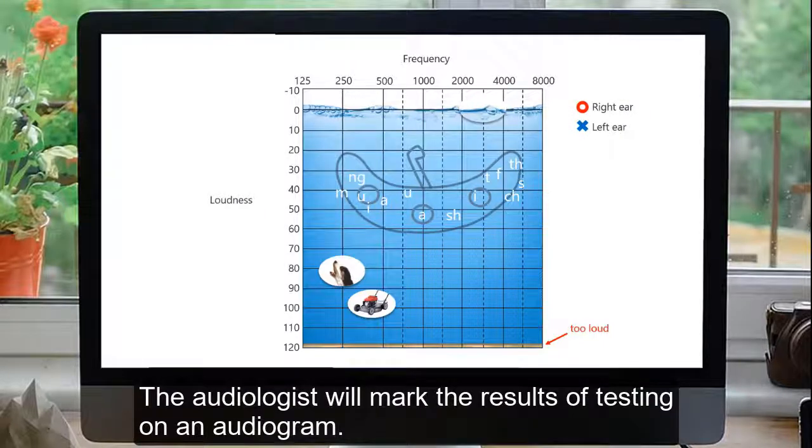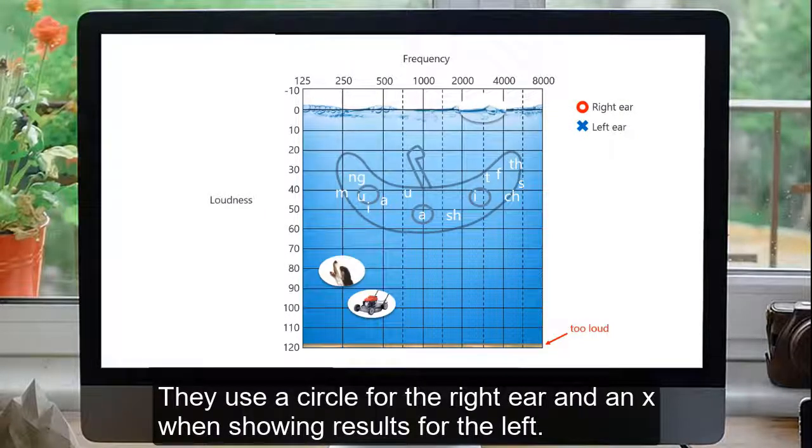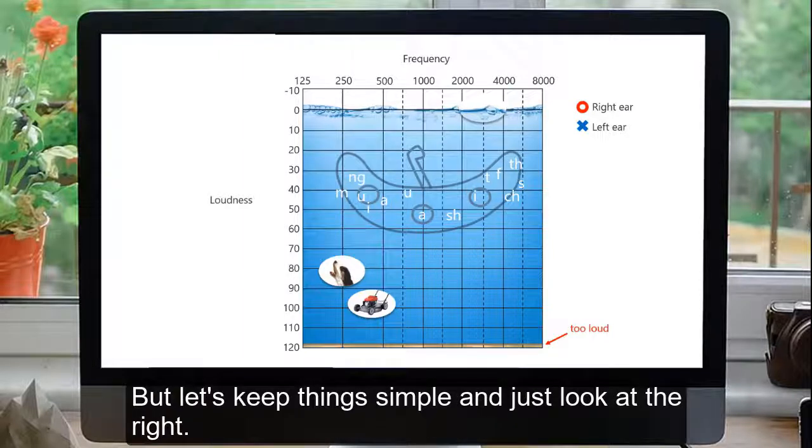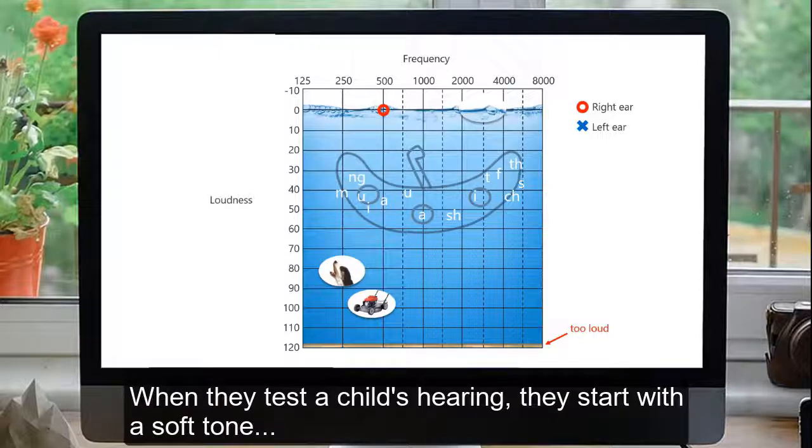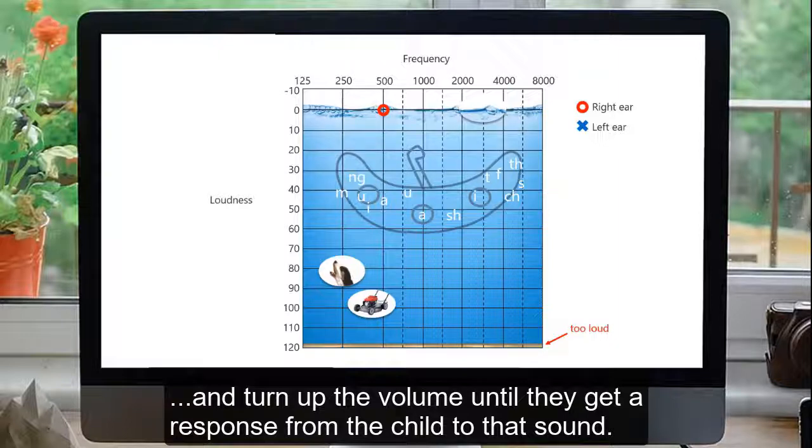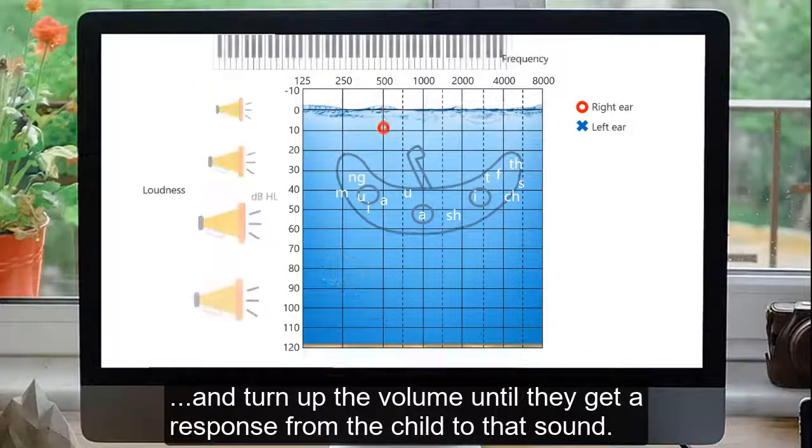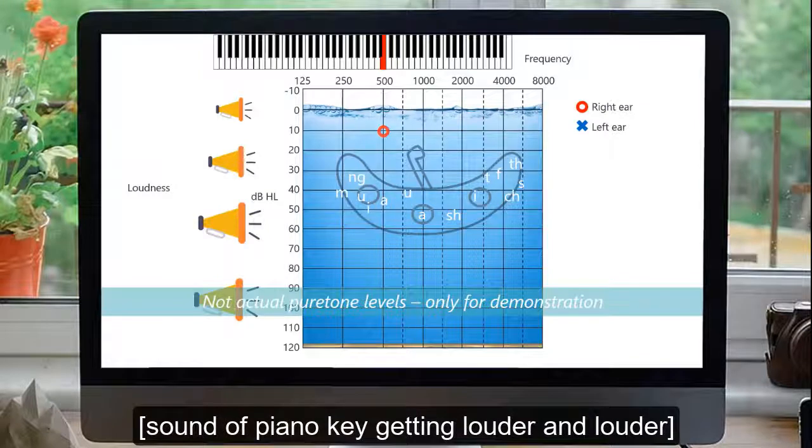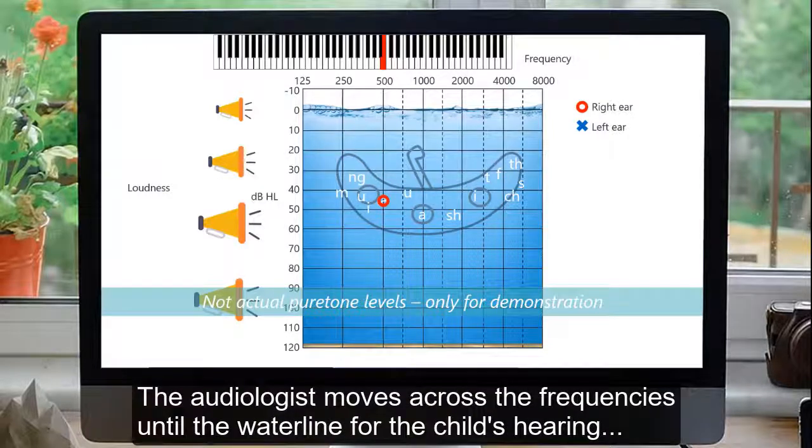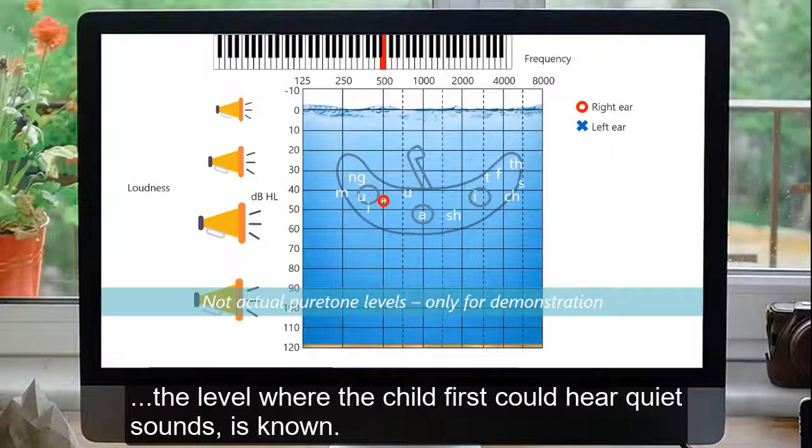The audiologist will mark the results of testing on an audiogram. They use a circle for the right ear, and an X when showing results for the left. But let's keep things simple, and just look at the right. When they test a child's hearing, they start with a soft tone, and turn up the volume until they get a response from the child to that sound. The audiologist moves across the frequencies until the waterline for the child's hearing, the level where that child first could hear quiet sounds, is known.